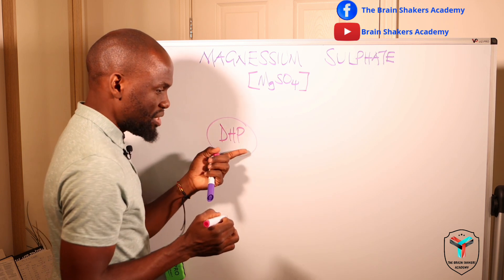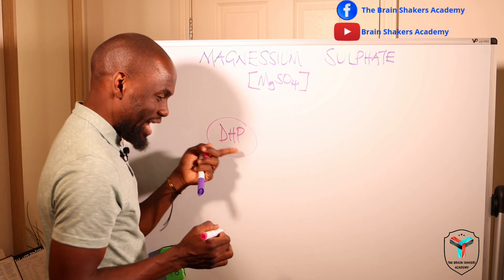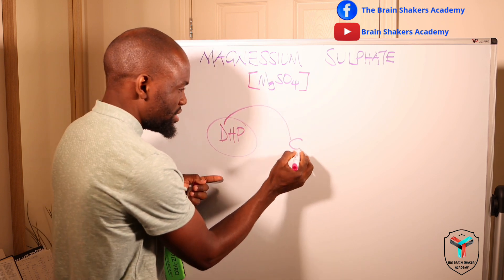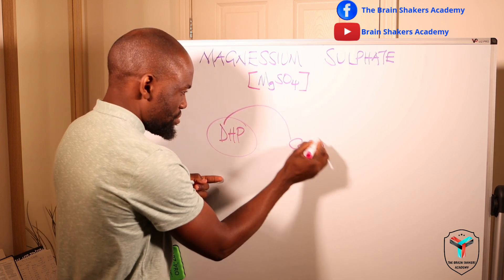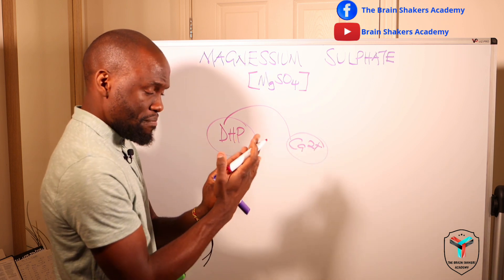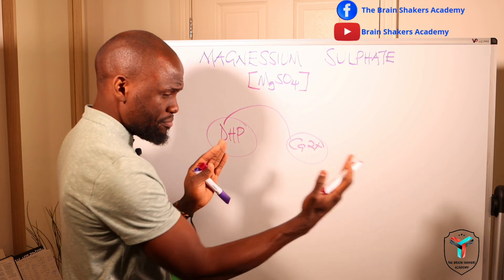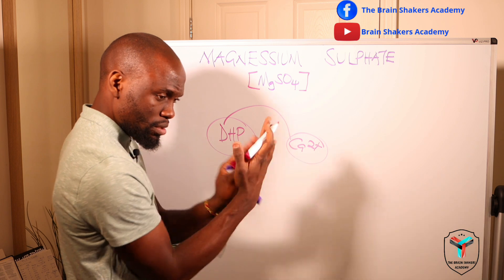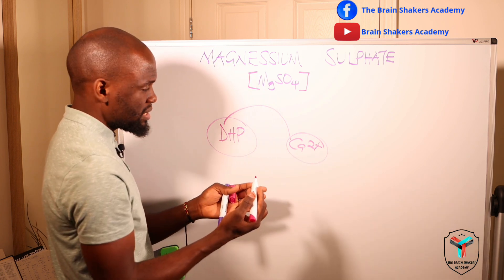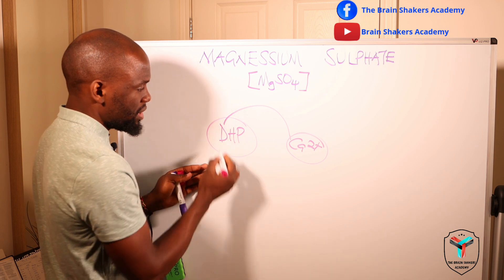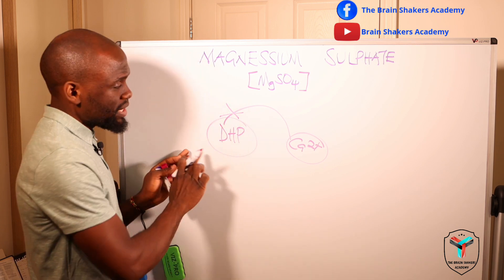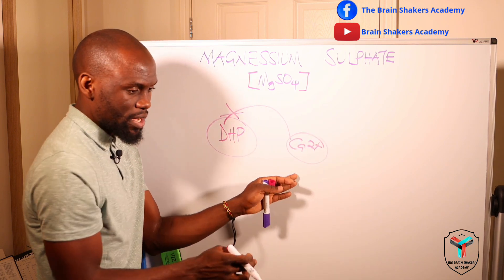The DHP receptor is the dihydropyridine receptor, and it is what allows the movement of calcium into cells. Calcium is needed for the contraction of muscle cells — that is, for the movement of actin and myosin closer to each other. When magnesium sulfate is administered, it comes in and blocks this dihydropyridine receptor so that there is no movement of calcium into the cell.